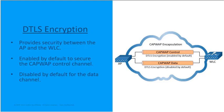CAPWAP data encryption is optional, and it would be enabled per access point. It requires a DTLS license to be installed on the wireless LAN controller prior to being enabled on an access point.